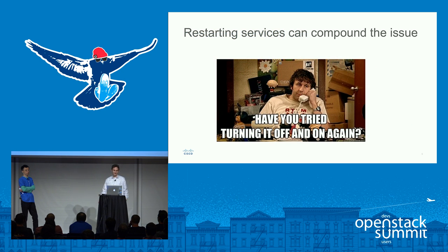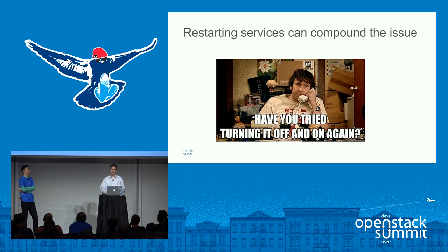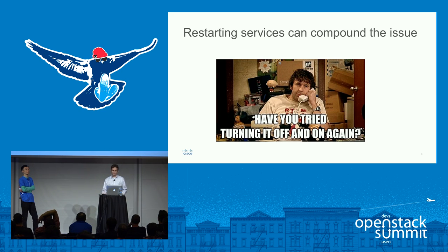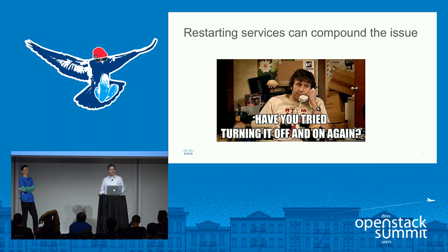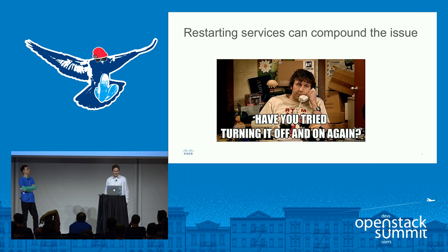The first thing you may think is to just go and restart everything. Unfortunately, if you're running into scale issues, this can actually just compound everything and you may actually melt down everything, ending up having to stop the whole cluster and bring up services one at a time. In our early days we were using all the default settings for RPC and Rabbit, and our cluster grew a lot larger than we expected. We quickly realized that RabbitMQ was our bottleneck and we needed to do some configuration tuning.